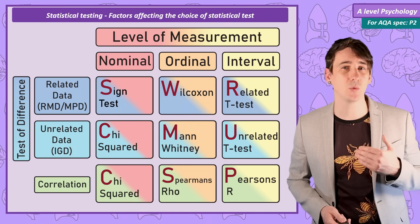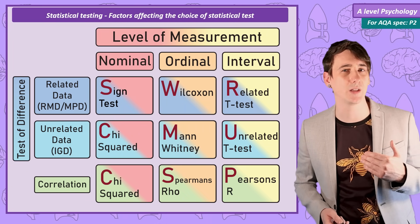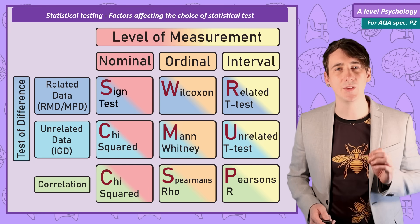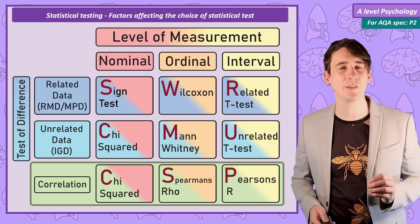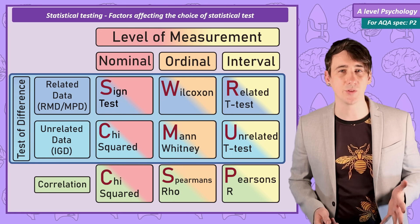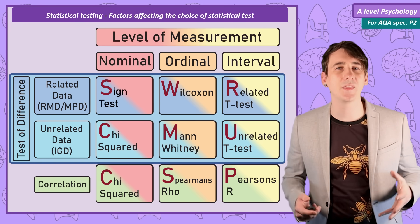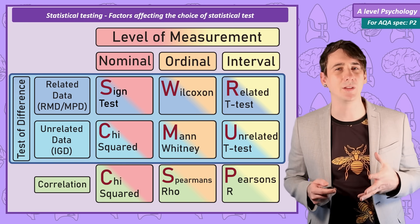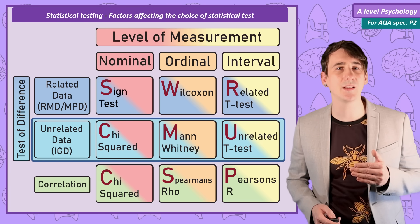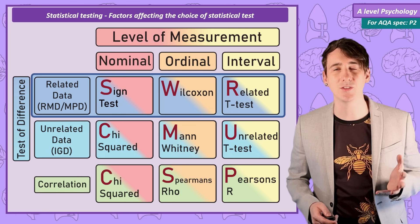We can write in: Sign Test, Wilcoxon, Related t-test, Chi-squared, Mann-Whitney, Unrelated t-test, Chi-squared again, Spearman's rho, and Pearson's. If the study is a correlational study, the stats test will be one on the bottom row. If it is an experiment — a test of difference — the test will be on the top two rows. Narrow it down by experimental design: independent groups means unrelated data, found in the middle row; repeated measures or matched pairs means related data, found in the top row. The final decision is on data type: nominal in the first column, ordinal in the second, interval in the third.